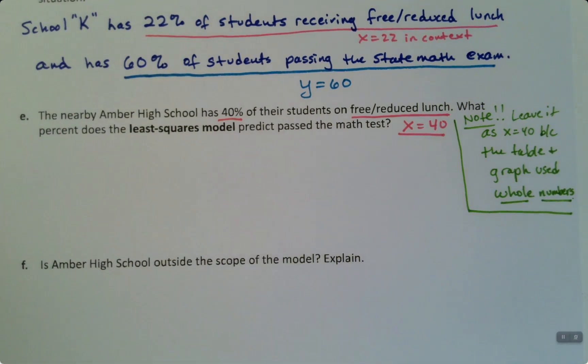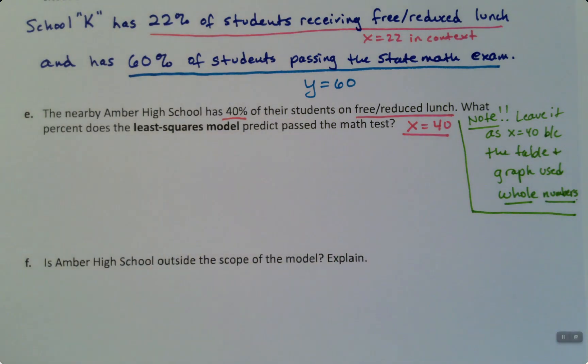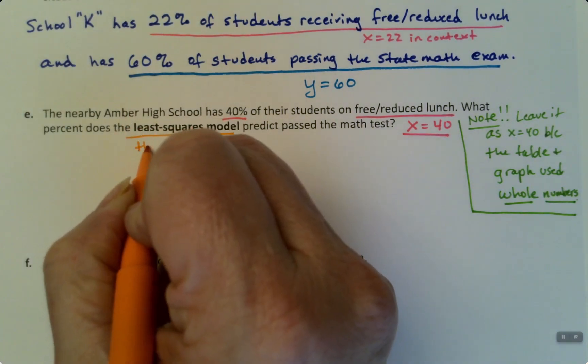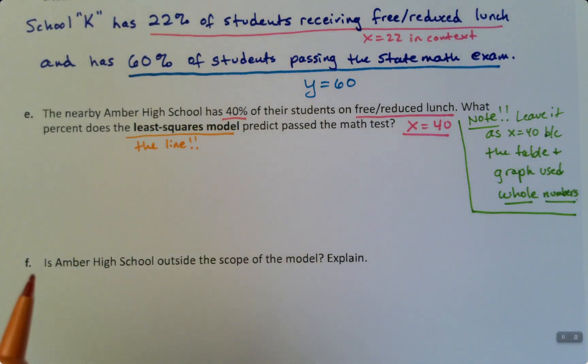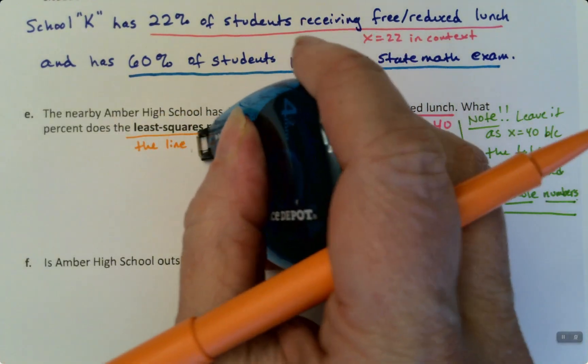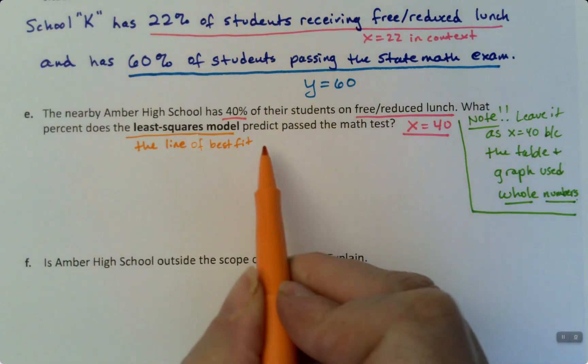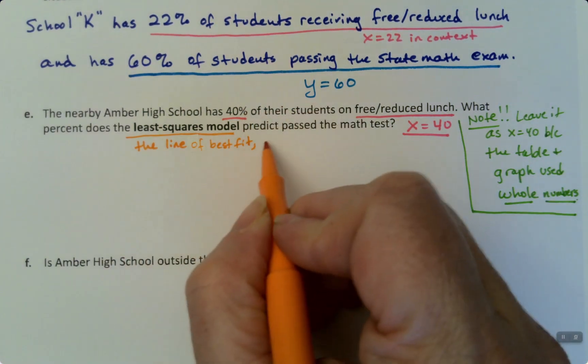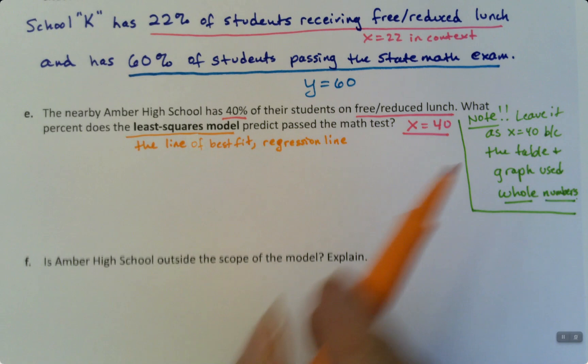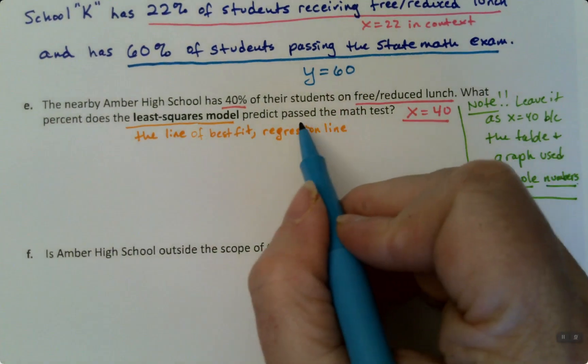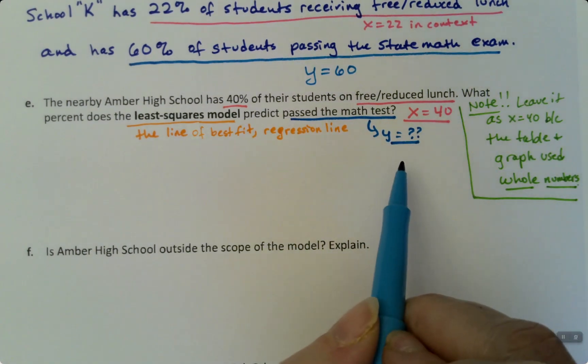Alright, so it's saying x is 40. Then it's saying what percent does the least squares regression model, a.k.a. the line of best fit, right? That's all that is. That's just saying the line. The linear model, right? The line of best fit. Here, I'll call it the line of best fit. It's just a fancy way of saying the same thing. The line of best fit. Predict, or you could call it the regression model. Regression line, whatever. Predict passed the math exam. Ah, passed the math exam is y. So they're saying x is 40, what's y?